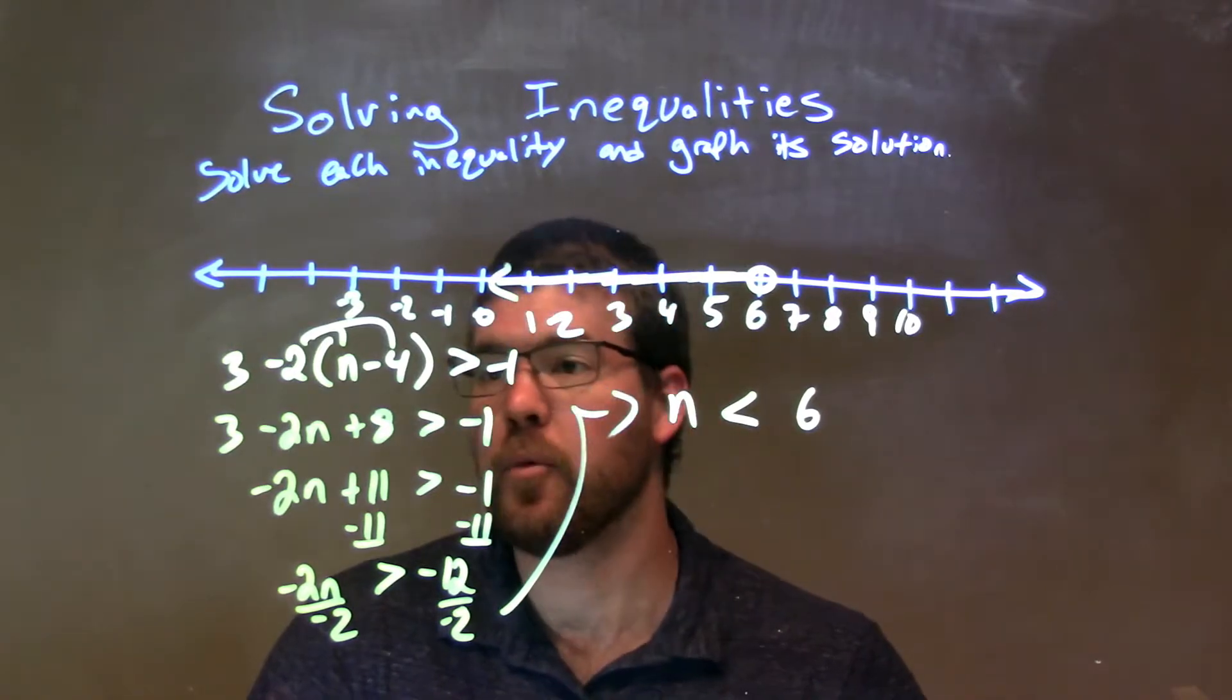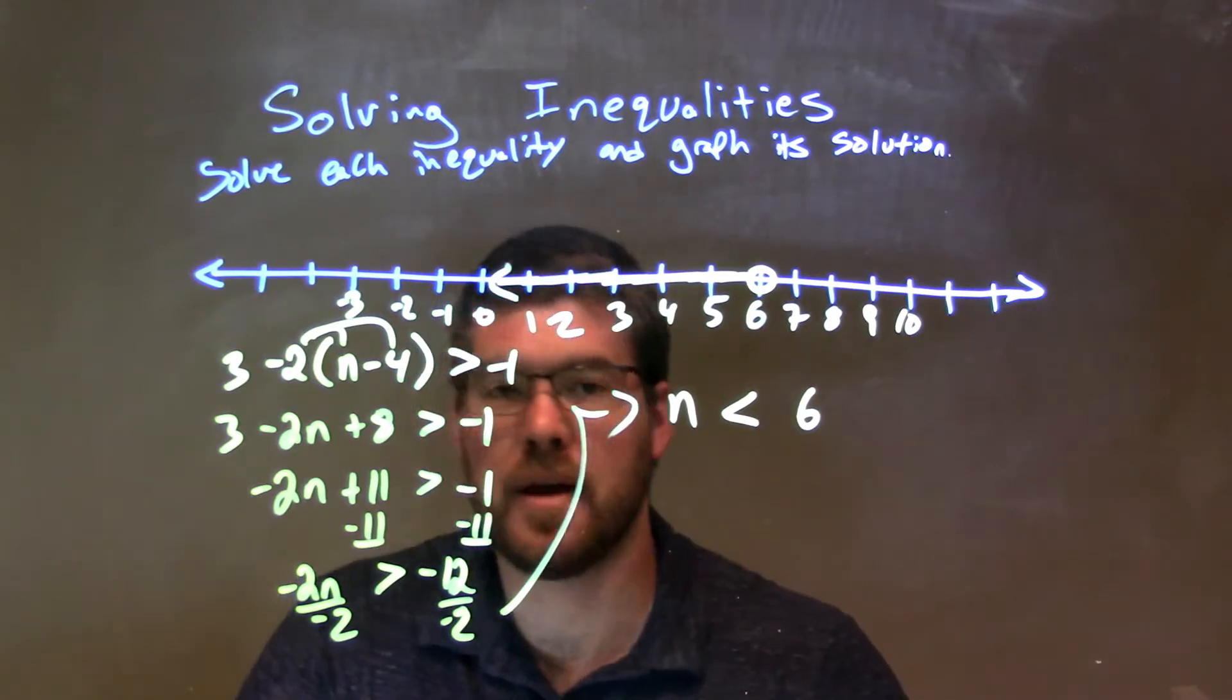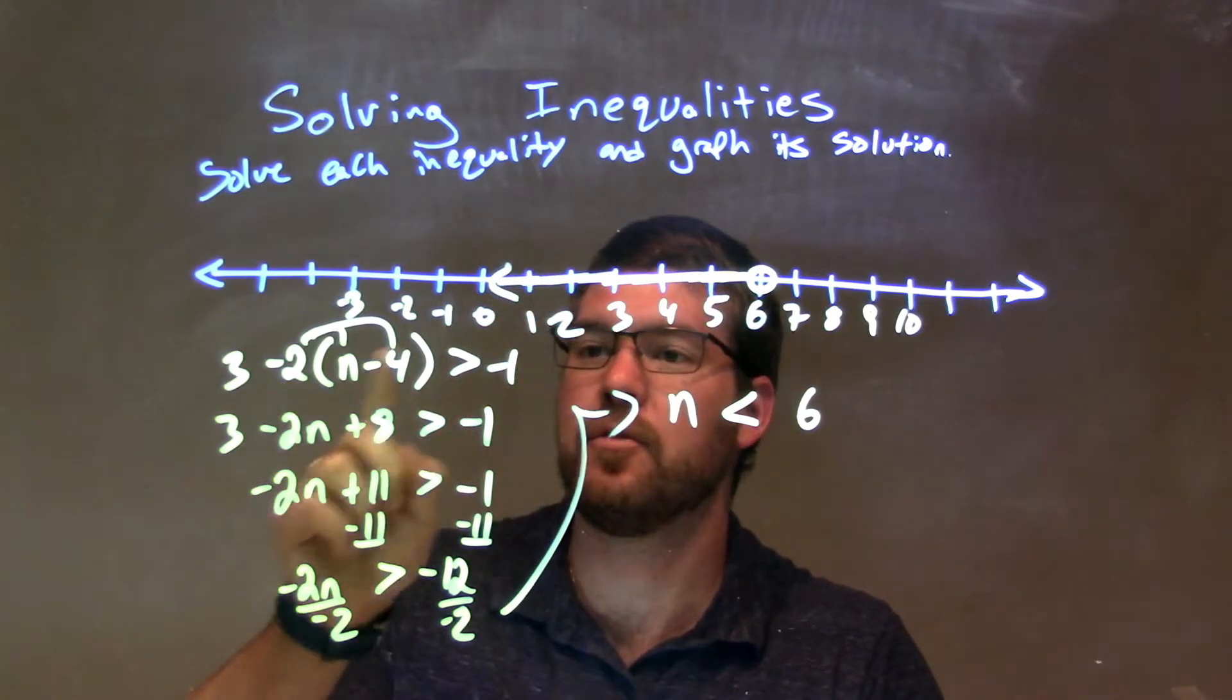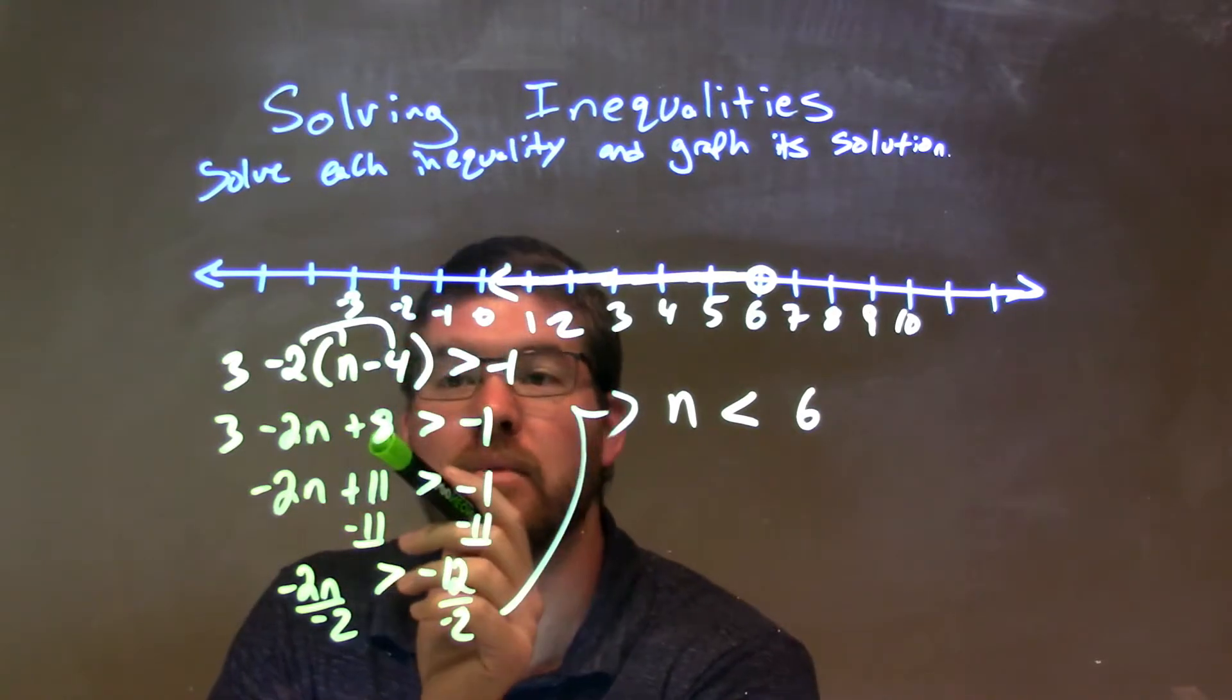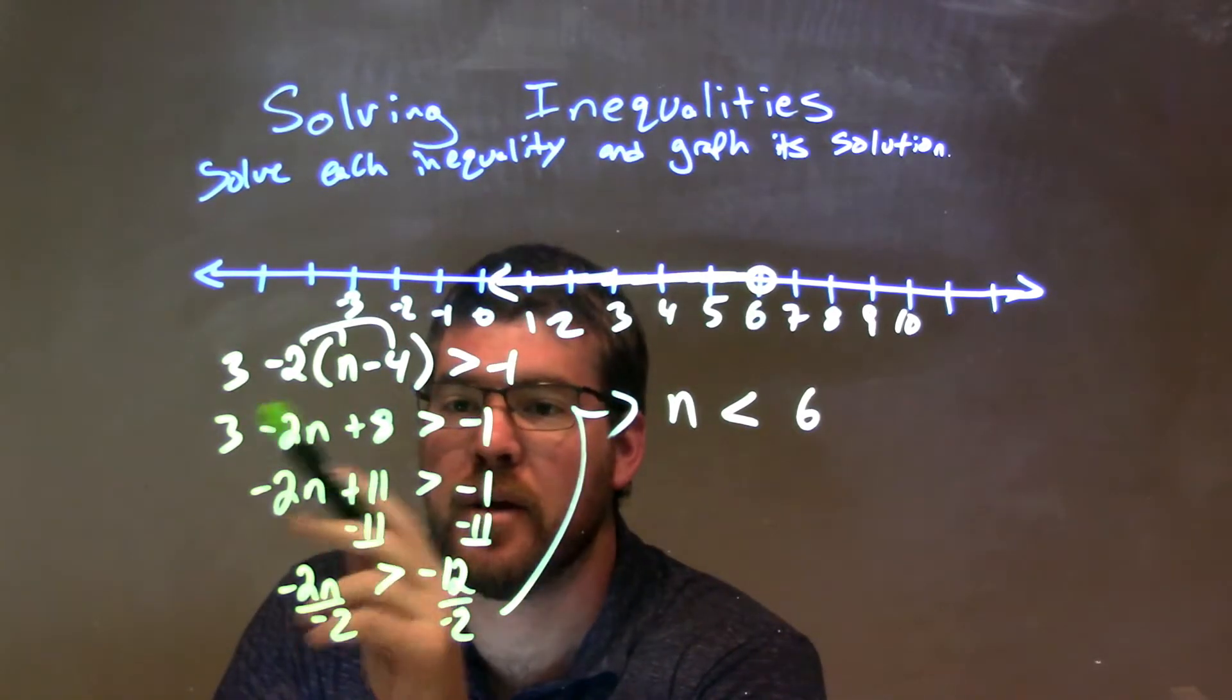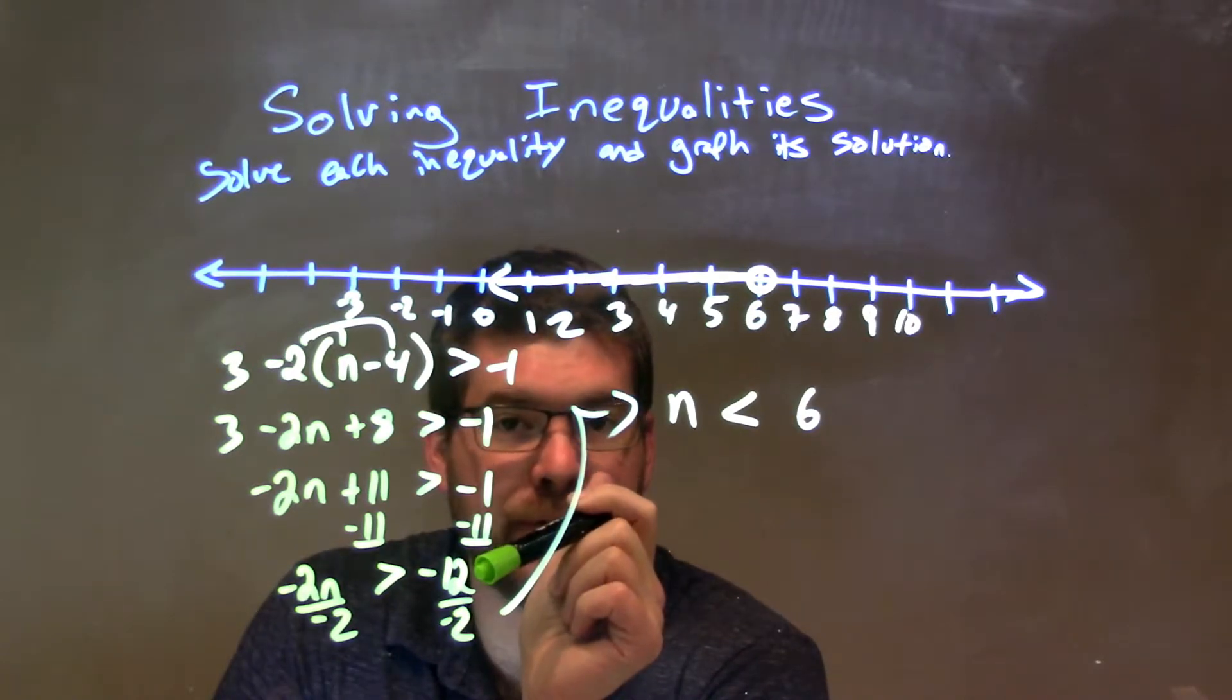So, let's recap. We're given 3 minus 2 times n minus 4 is greater than negative 1. I distribute the negative 2 across to both parts, giving me negative 2n plus 8 right there. 8 and 3 is 11. Then, I subtract 11 from both sides, gives me negative 12.